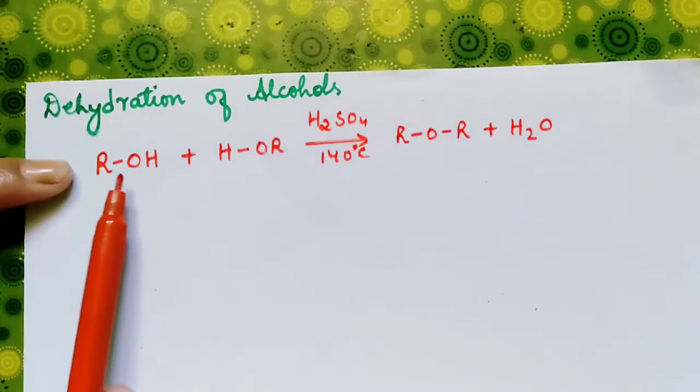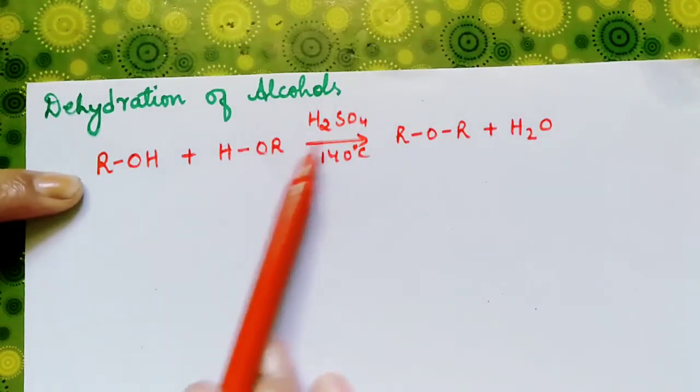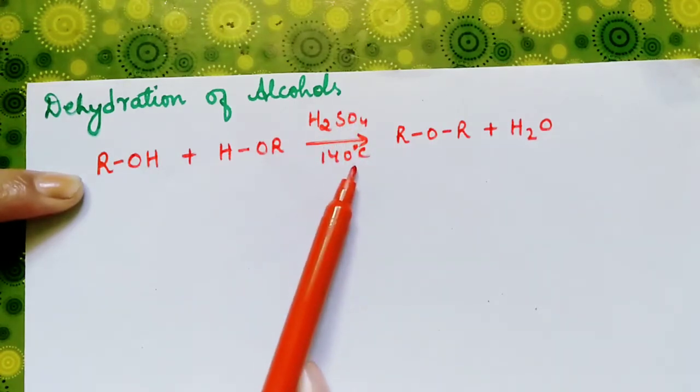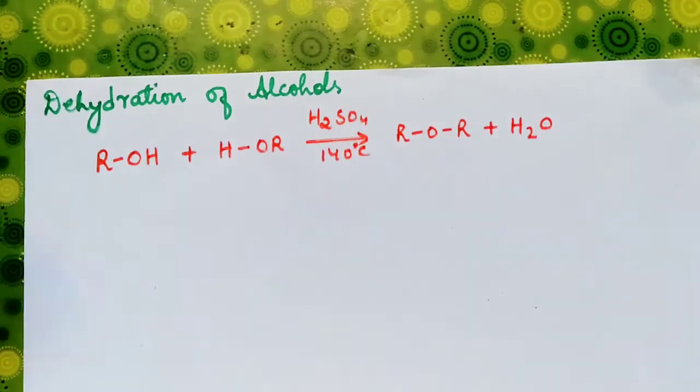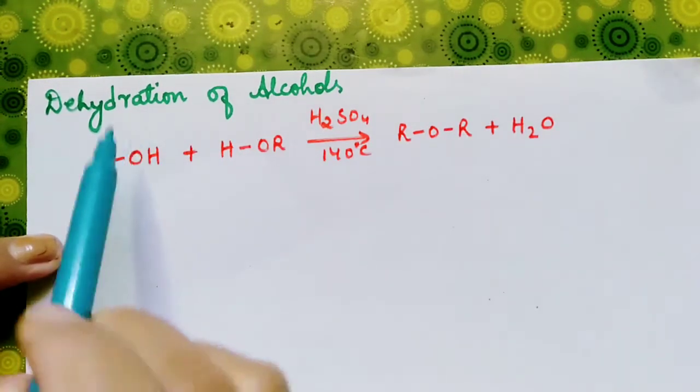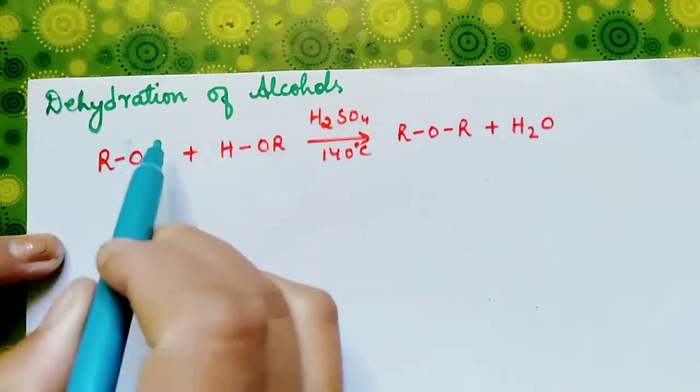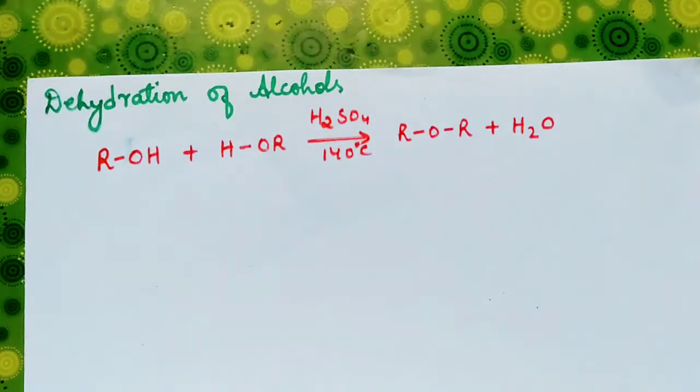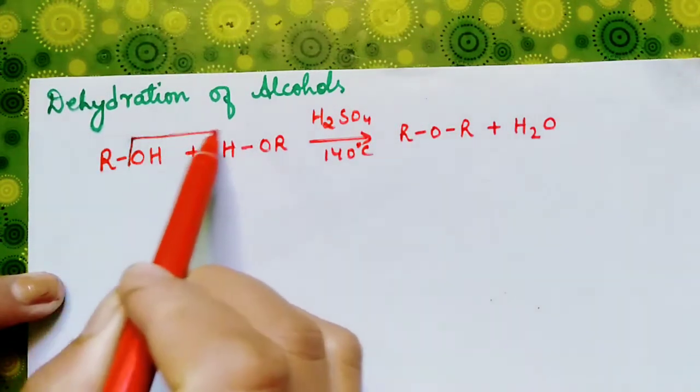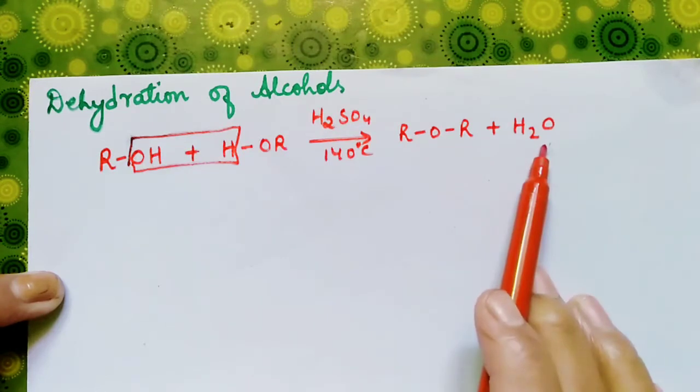Here we have two molecules of alcohol in the presence of sulfuric acid at 140 degree Celsius. We have the elimination of water molecule from the alcohol molecules, and so we have ether with water molecule.